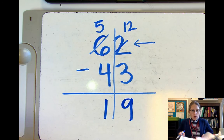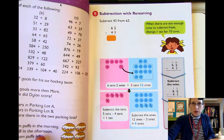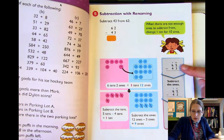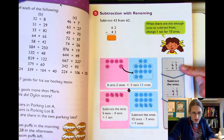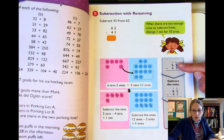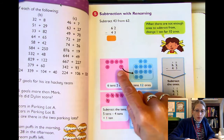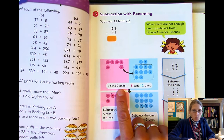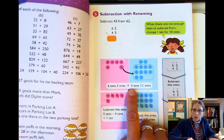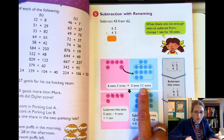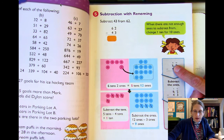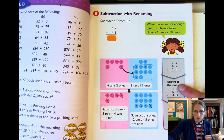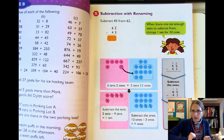Let's look at how our textbook shows us, just another way to think about this. Again, this is the same problem: 62 minus 43. We can't subtract in the ones place — if we have two, we can't take away three. So we rename one of these tens as 10 ones. Six tens and two ones equals five tens and 12 ones. That's why we cross off the six and make it a five, and change the two to a 12. Then we subtract the ones, subtract the tens, and we've got our answer.